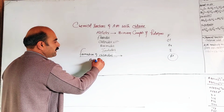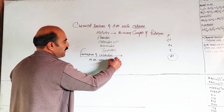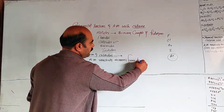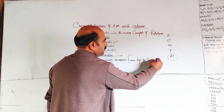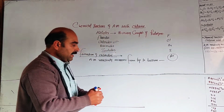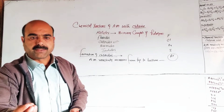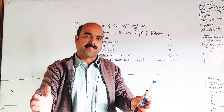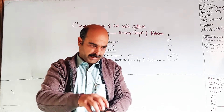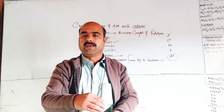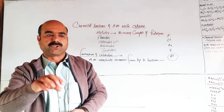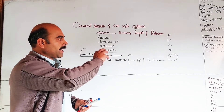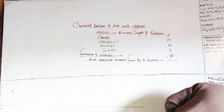The main reason alkali metal reactivity increases from top to bottom is that atomic size increases, so the distance between valence electrons and the nucleus increases. This decreases the attraction between valence electron and nucleus, lowering ionization energy, so electrons are lost more easily, forming positive ions more readily — hence reactivity increases.